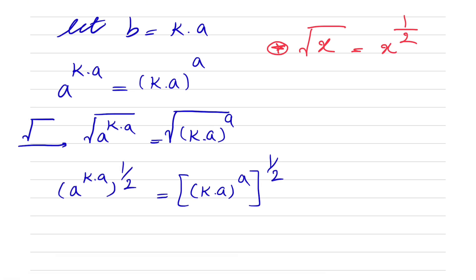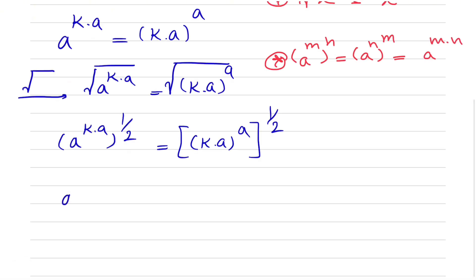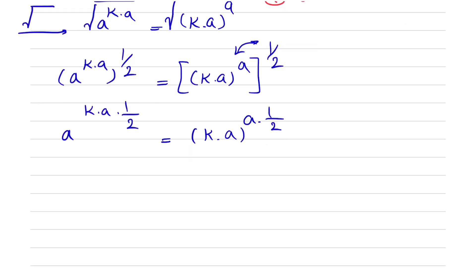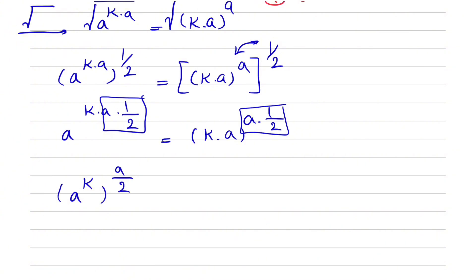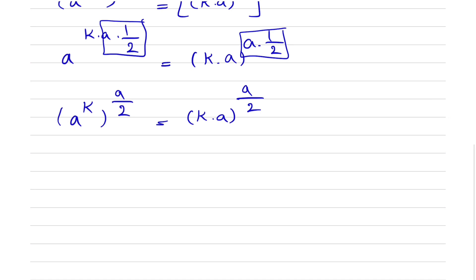Here we're going to use the laws of exponents. When we have a to the power of m, all to the power of n, this equals a to the power of m times n. So what we get is a to the power of k times a times one half. We can write it as a to the power of k, all to the power of a over 2, equal to k times a to the power of a over 2. Since the exponent is the same on both sides, we can equate the bases.